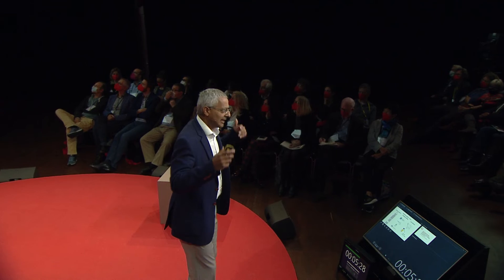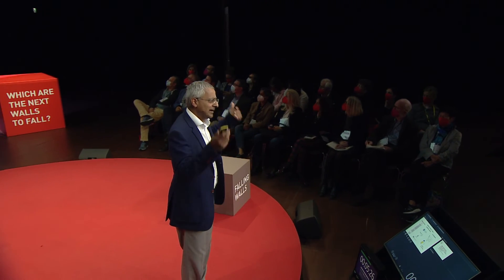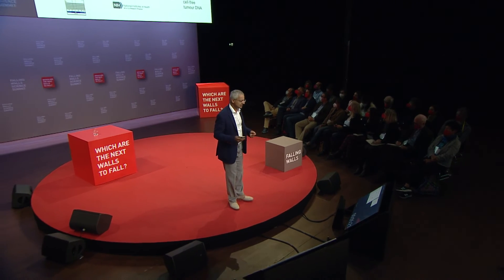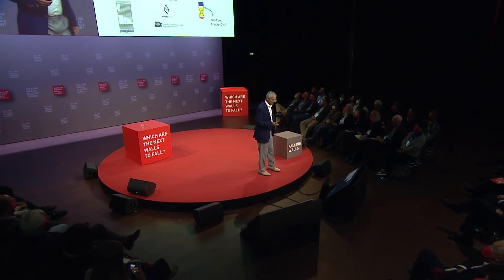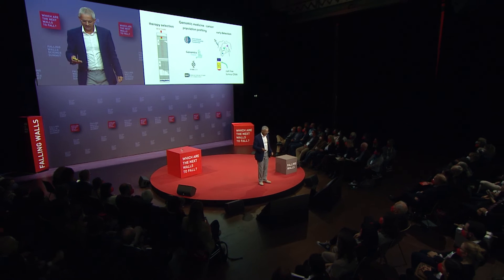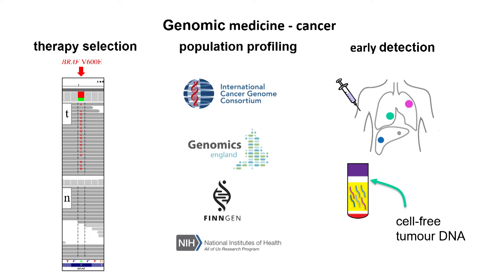Going back to the question of why would you sequence DNA — why sequence human genomes — I'm going to talk about this in the context of three disease areas. First is cancer. Cancer is caused in large part by changes called mutations to your DNA. A very early example is what you can do by knowing the sequence of a cancer.